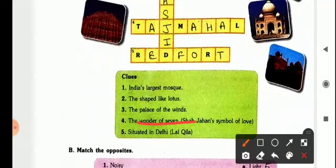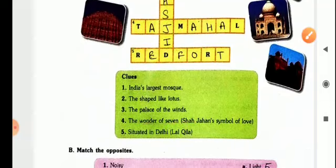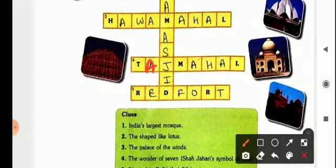Next, the wonder of seven, Shah Jahan, symbol of love, it is Taj Mahal. T is already written, you have to write A, then Jama Masjid J is already there, then M is already written, you have to write A, H, A and L is already there for you.